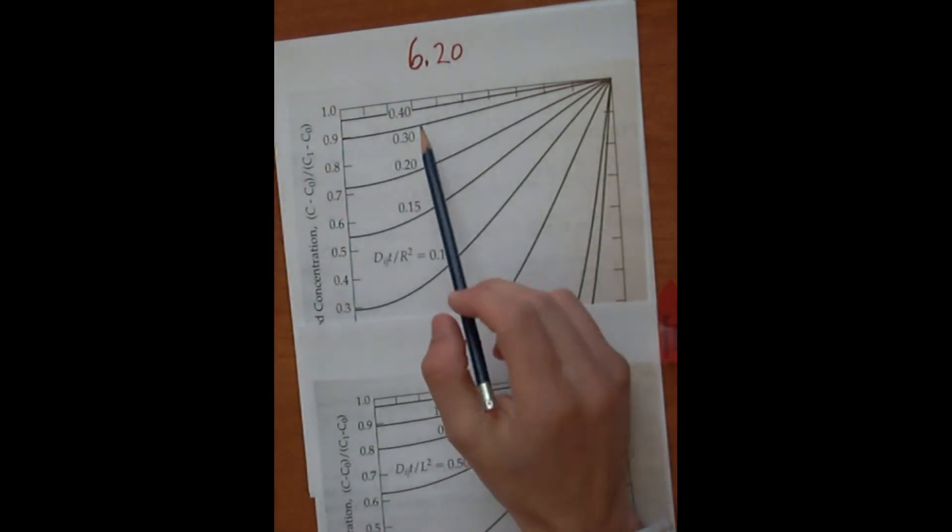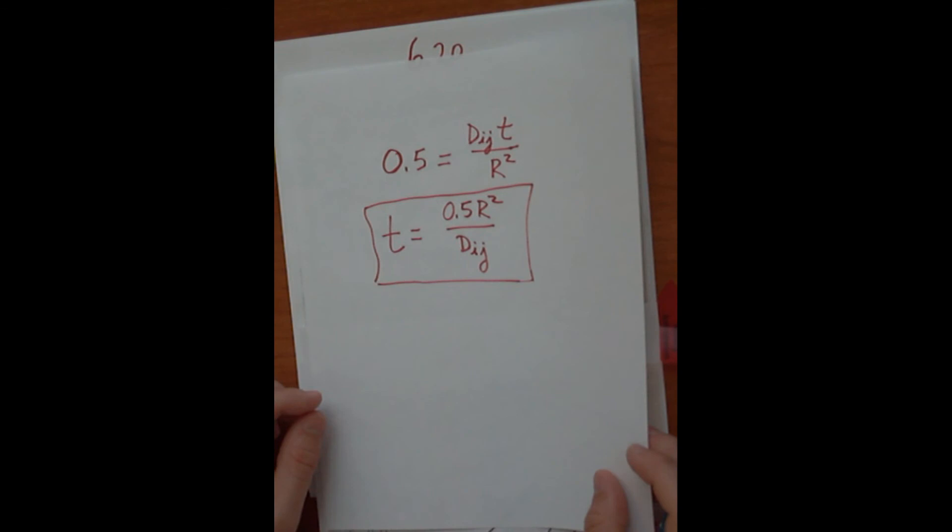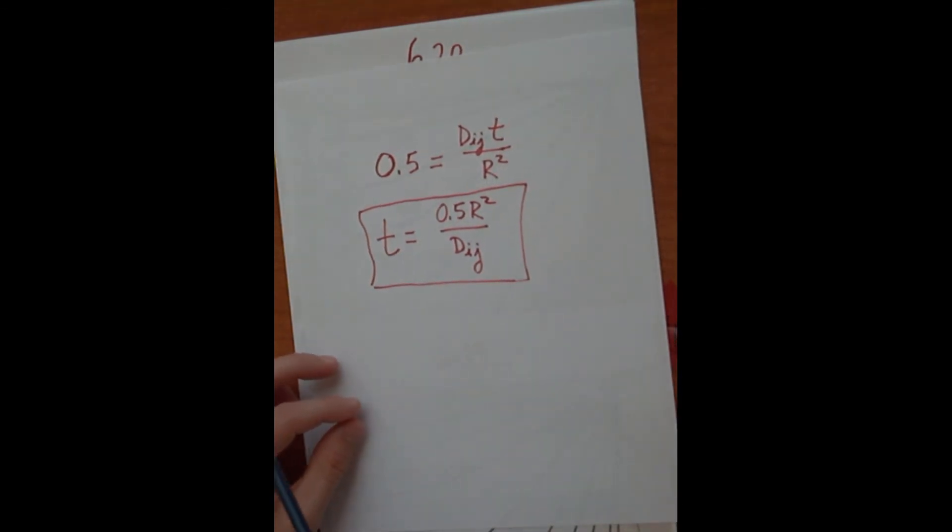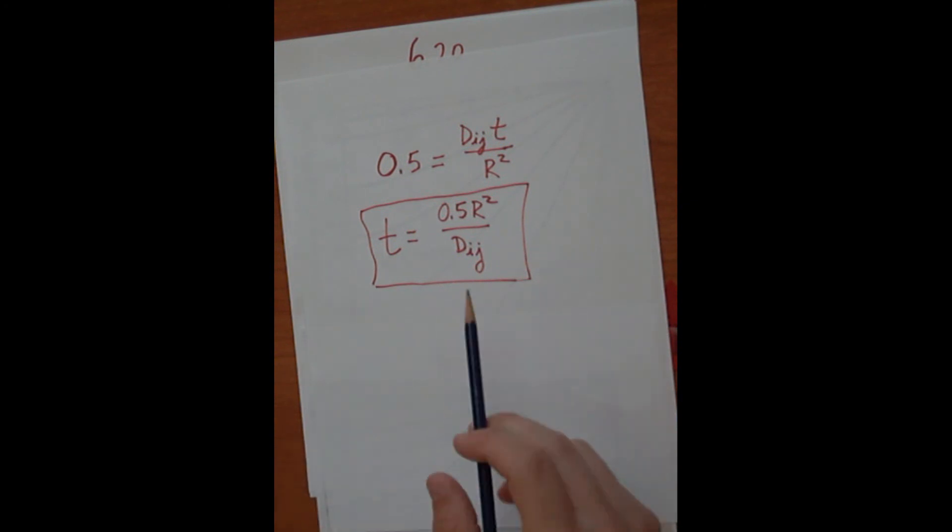And just like before, if we say that tau is equal to 0.5, when the line's horizontal and the concentrations are the same throughout the sphere, then we can figure out the time it takes to reach steady state, which is given by this equation. So remember, that was slightly different from the time in the slab to reach steady state, in which it was 2 times R squared. So as you can see, it's a little bit faster to reach steady state in the sphere.